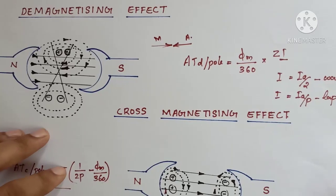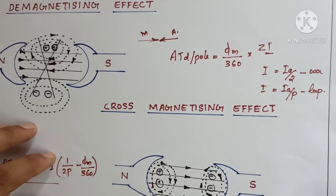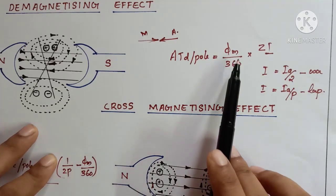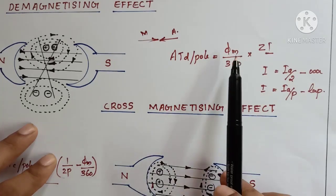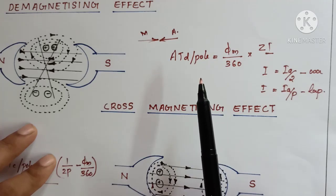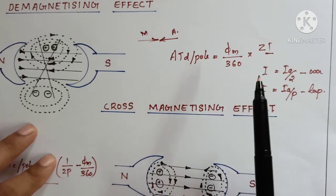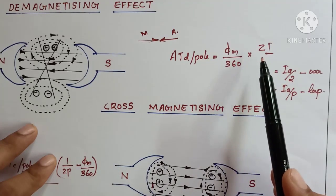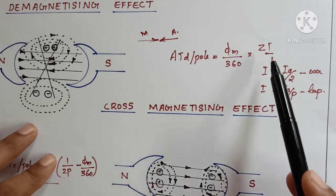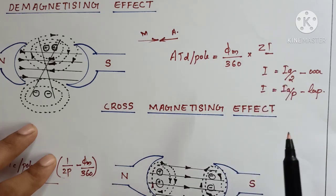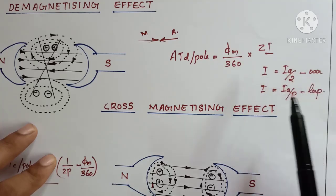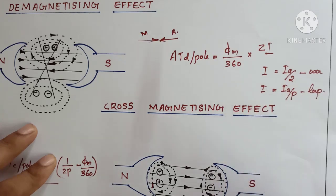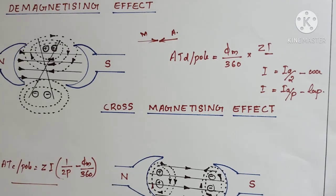For calculation purposes, we can calculate the demagnetizing ampere turns per pole using this equation: (φm / 360) × Z × I. Here φm is the total forward lead in mechanical or angular degrees, Z is the total number of conductors, and I is the current in each armature conductor. For wave winding, I equals Ia/2, and for lap winding, I equals Ia/P, where P is the number of poles. The demagnetizing effect will deeply affect the main magnetic field.